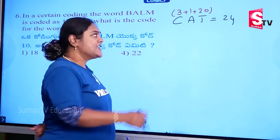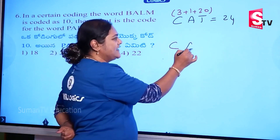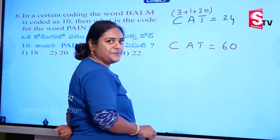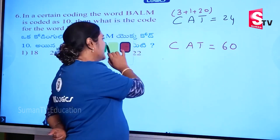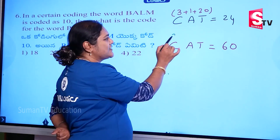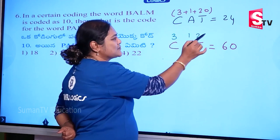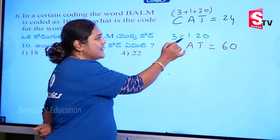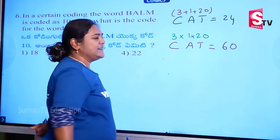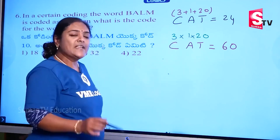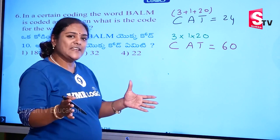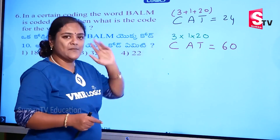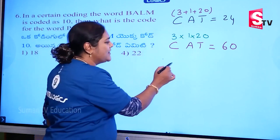Fantastic! Now I will write 60. If I do this, I will try to get the numbers: C = 3, A = 1, T = 20. 3 into 1 = 3; 3 into 20 = 60. So here the place values are multiplied — plus and multiply.